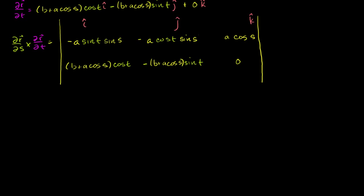This is going to be i times the sub-determinant — cross out this column and that row. It's going to be this term times 0, which is just 0, minus this term times that term. The negative signs cancel out, so this will be positive. It's i times cosine of s times (b + a·cos(s)) times sine of t. So we've got our i term for the cross product.